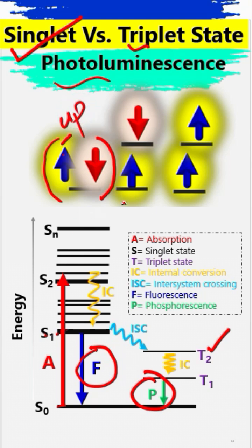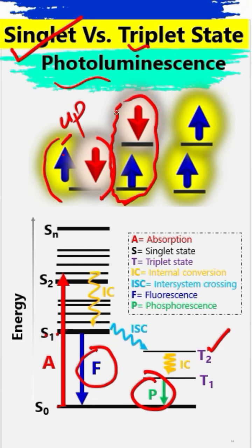Now in the singlet excited states, the electron jumps to the excited state and the spin remains the same as before — the spin does not change, but now it is in the excited state.